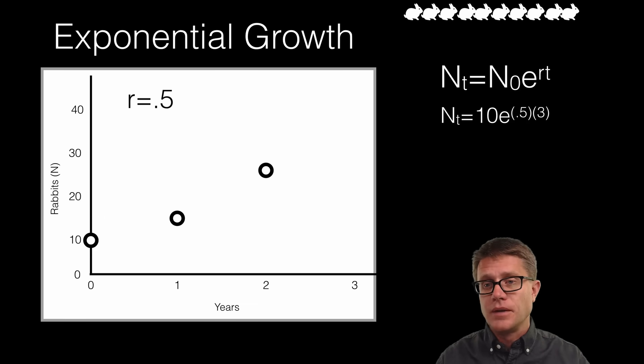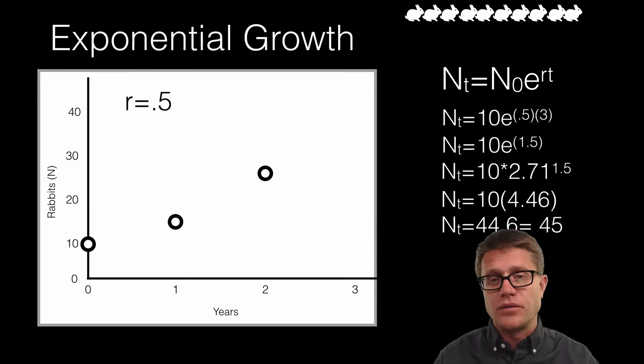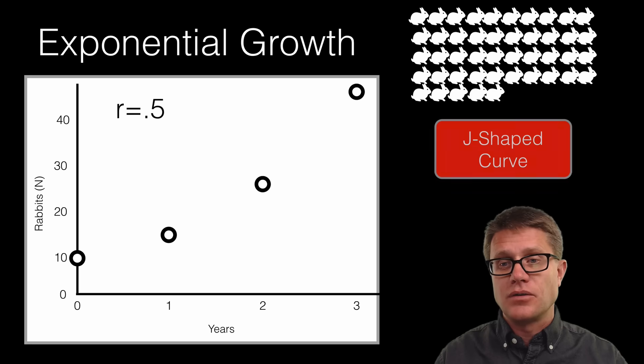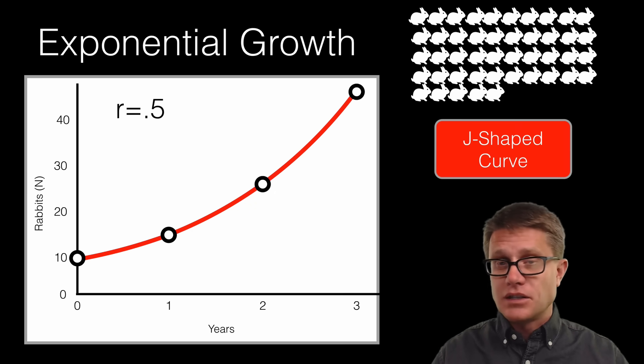Let us go for year 3. So if we figure out year 3 again our intrinsic growth rate is still 0.5. 3 is going to be the year we are at. Still have that same initial. And so this is going to be 2.71 raised to the 1.5 power. You would probably need a calculator to do this. We now get 44.6 or let us say 45 rabbits. So if we graph it you can see that the population is increasing like that. We have what is called a J shaped curve. And it is going to increase rapidly over time.